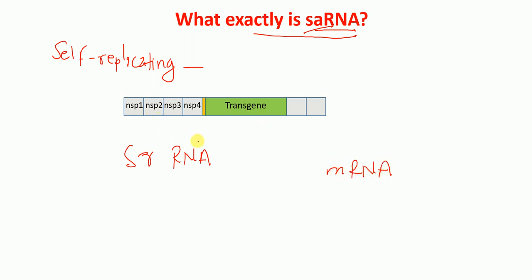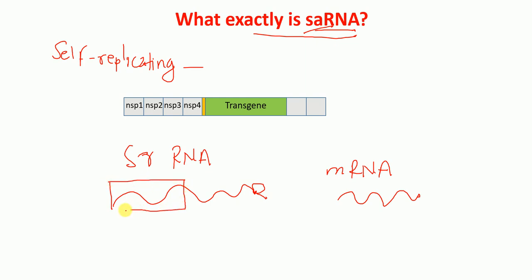Let's say that this here is the self-replicating RNA and this here is the messenger RNA. What is the difference between these two? In the self-replicating RNA, in addition to the coding sequence of our gene of interest, we also have the non-structural sequences of non-structural proteins of viruses, especially alpha viruses — for example, non-structural protein 1 to non-structural protein 4.